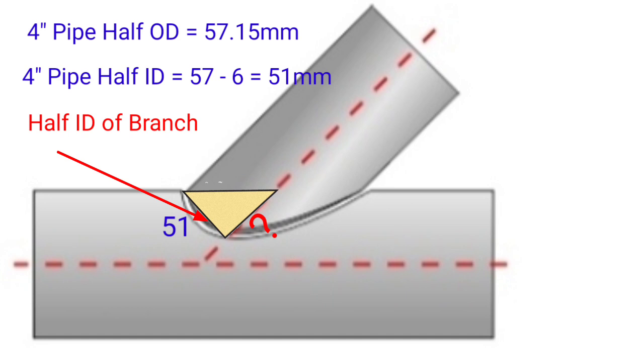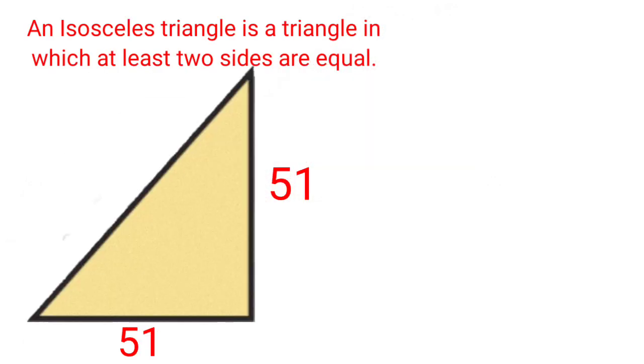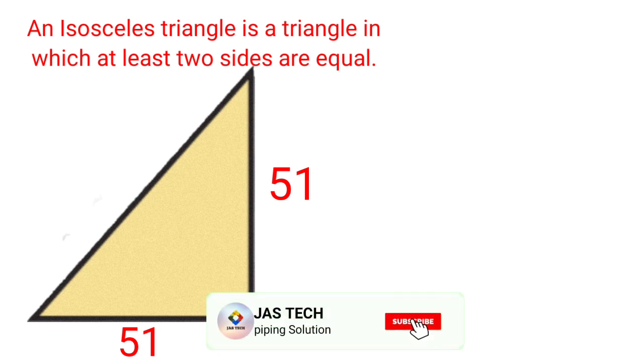So set value is 51mm as per isosceles triangle. If set value is 51, run value is also 51, because this is an isosceles 45 degree triangle. An isosceles triangle is a triangle in which at least two sides are equal.